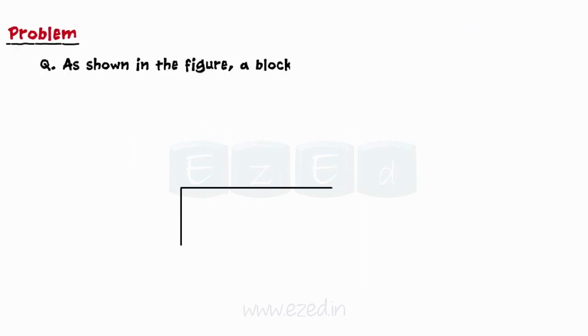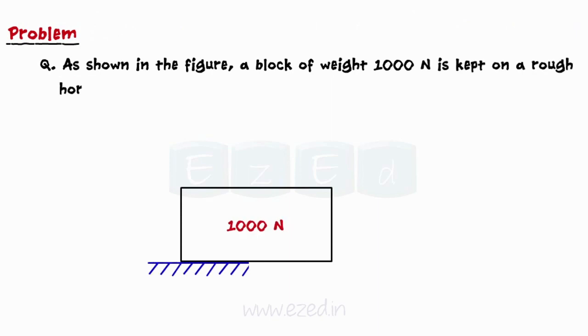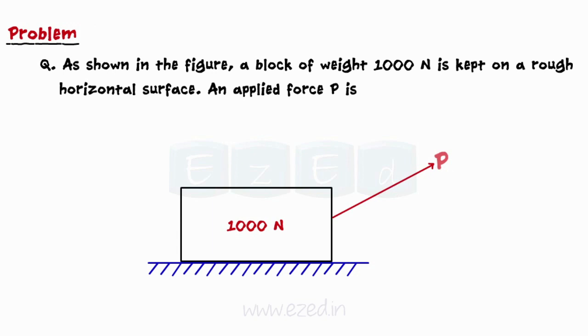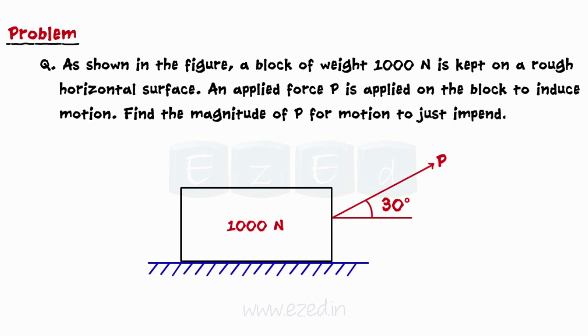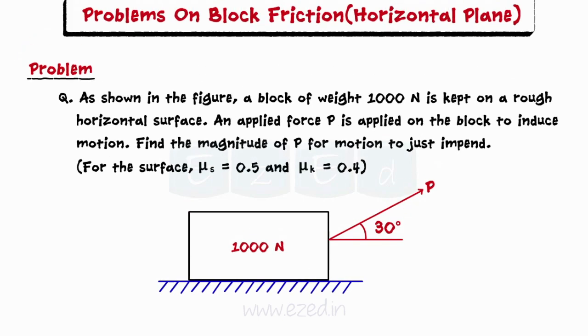Consider the following problem. As shown in the figure, a block of weight 1000 N is kept on a rough horizontal surface. An applied force P is applied on the block to induce motion. Find the magnitude of P for motion to just impend. For the surface, μs is 0.5 and μk is 0.4.